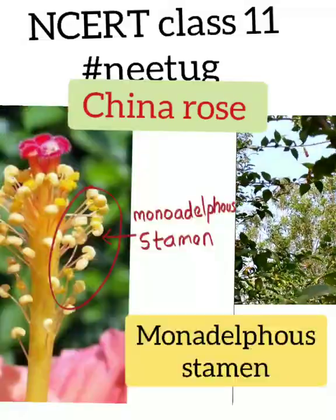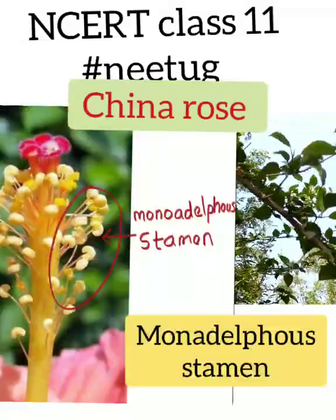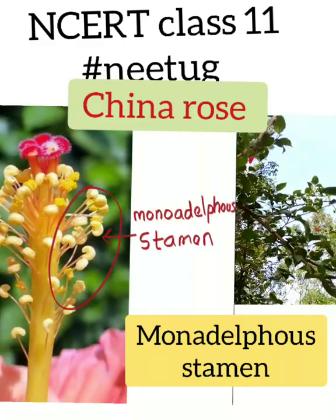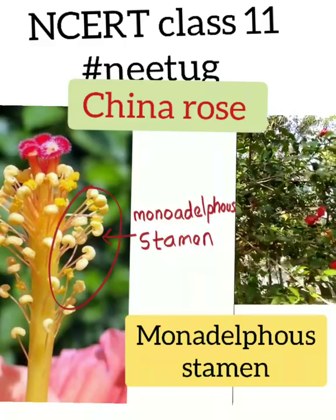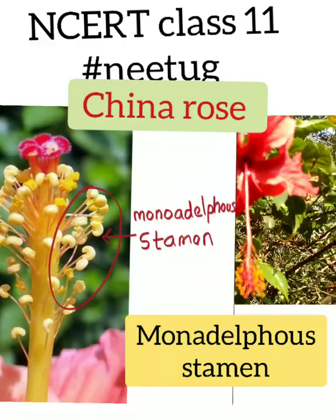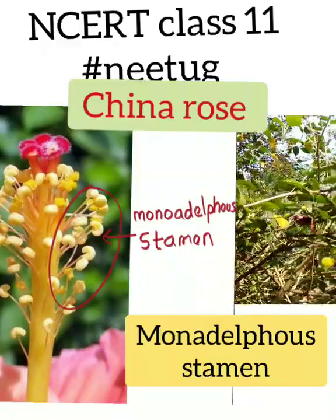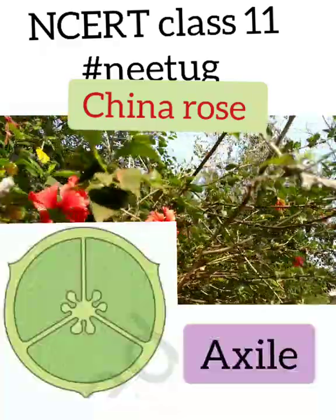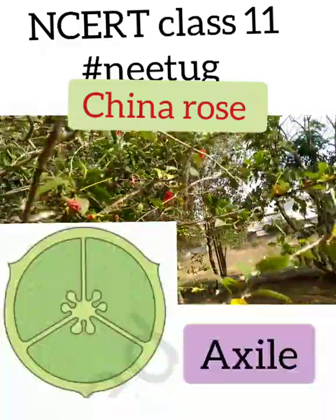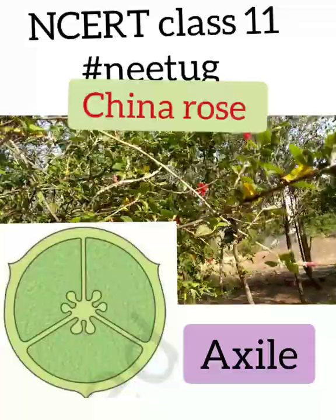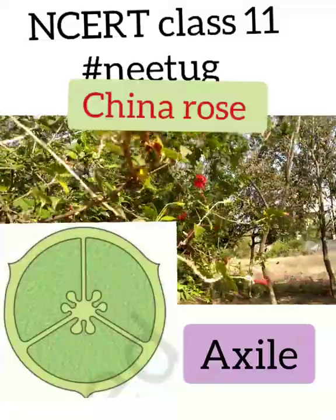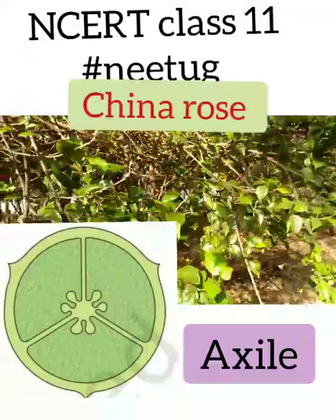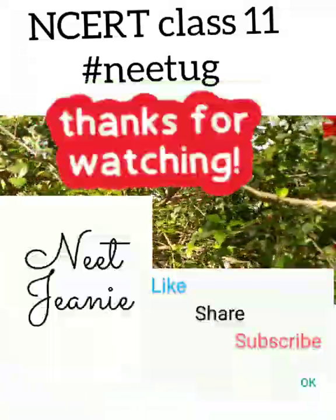China rose has monadelphous stamens, which means the stamens are united to form a single bundle. The ovary has axile placentation, which means ovules are attached to the axial placenta in a multilocular ovary.